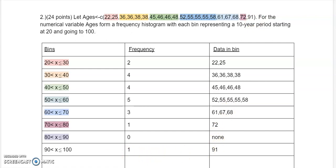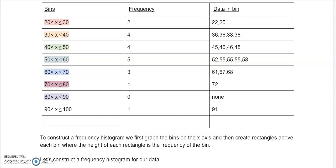Now, let's talk about how to make the histogram. To construct a frequency histogram, we first graph the bins on the x-axis. And then, create rectangles above each bin, where the height of each rectangle is the frequency of the bin. We'll do a histogram of this data right now. So, let's construct now a frequency histogram of our data.